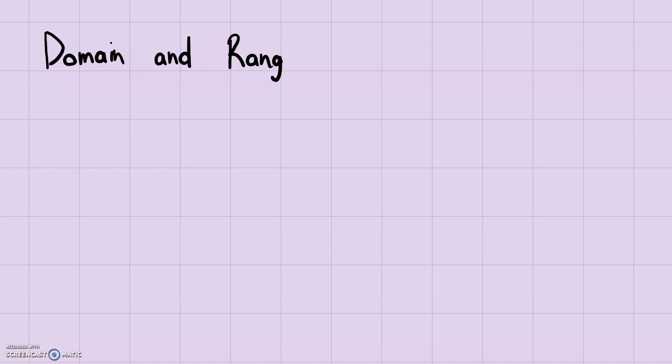We are continuing on in our lesson of analytic geometry, and this time we'll be focusing on domain and range. This should all be review. Domain is basically what we can put inside a function — the input — and the range is the output, what we get out from a function.